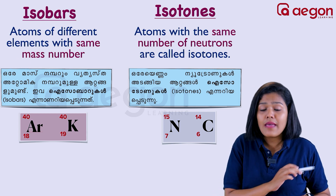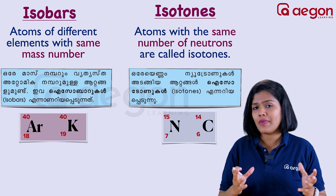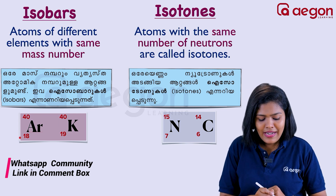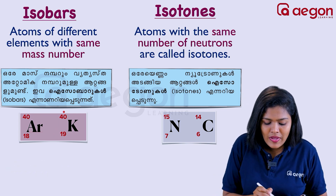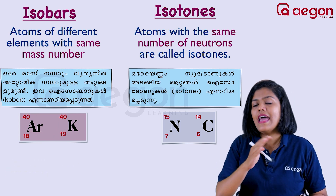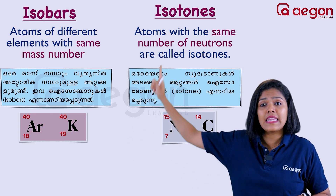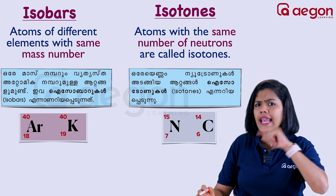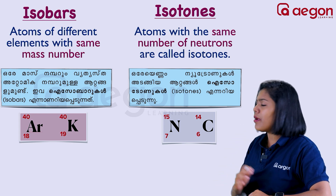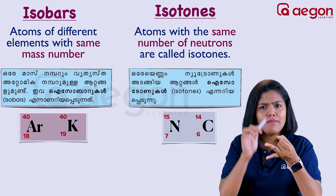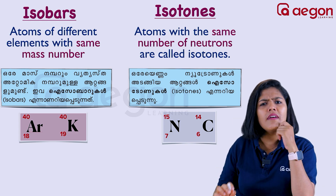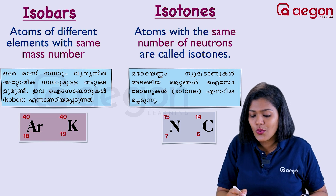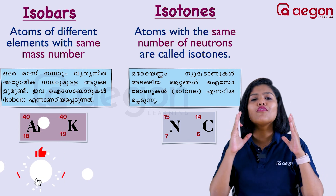Isobars are isotopes of different elements with the same mass number. For example, argon and potassium have different atomic numbers but the same mass number — they are known as isobars. Isotones, on the other hand — for example nitrogen and carbon — have different atomic numbers and different mass numbers, but they have the same number of neutrons.